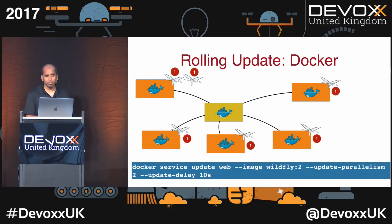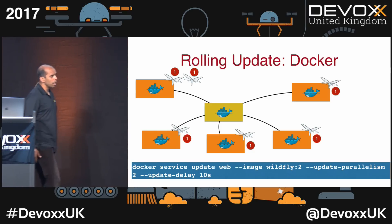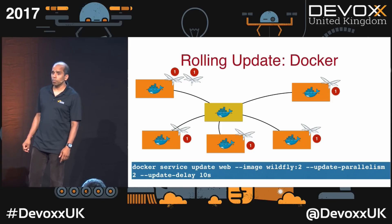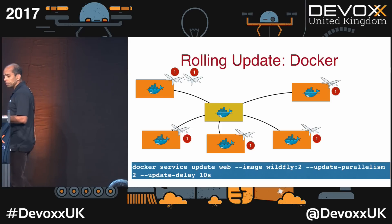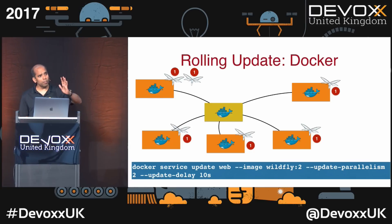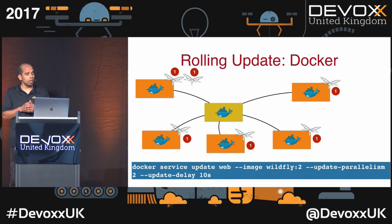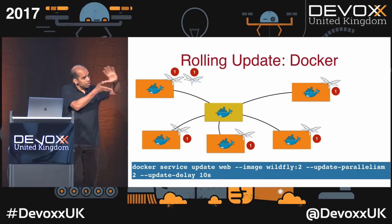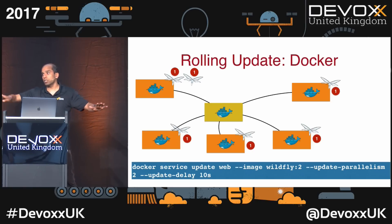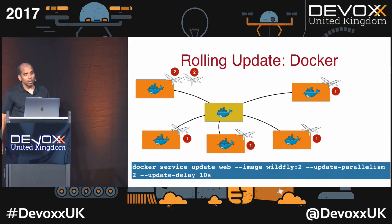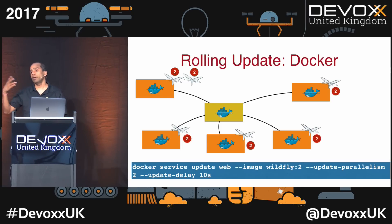For rolling updates in Docker: 'docker service update [service-name] --image wildfly:2 --update-parallelism 2 --update-delay 10s'. This updates two containers at a time, waits 10 seconds, then updates the next two, and so on. That's the simple rolling update available in Docker.